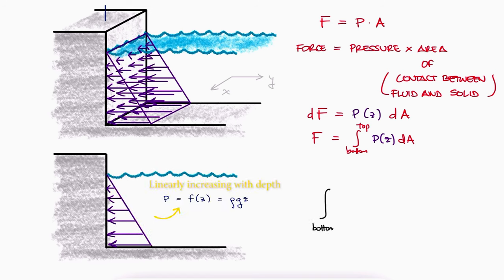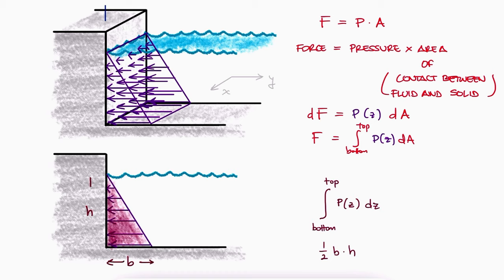The integral from the bottom to the top of the distributed load times dz would be the area under the curve, or simply the area of the triangle, just like it normally is for any of the triangular loads you've studied in courses like statics or mechanics of materials.